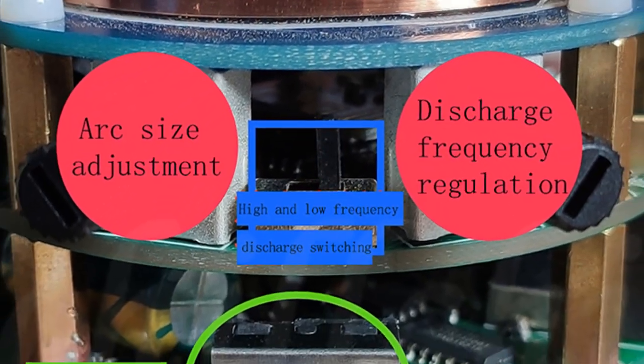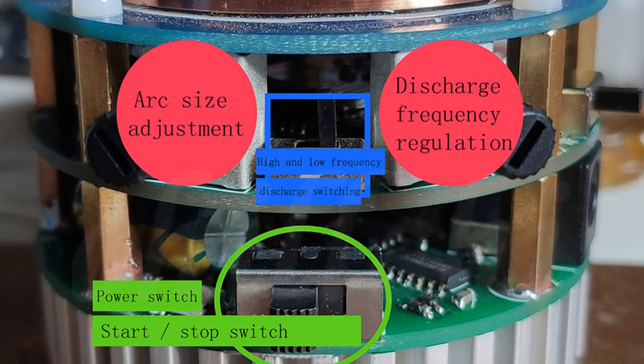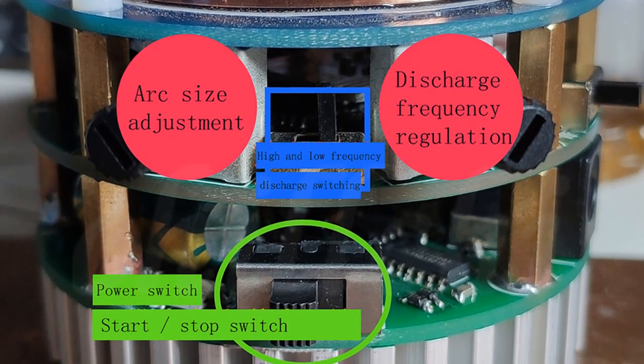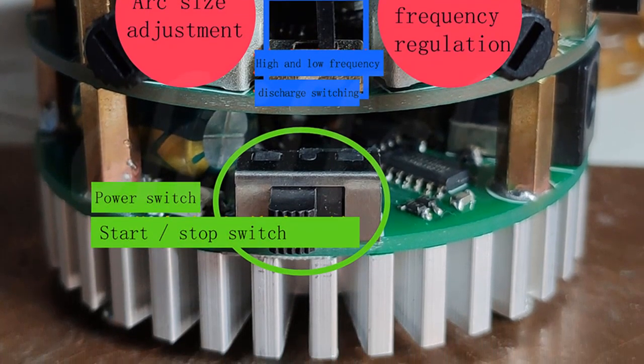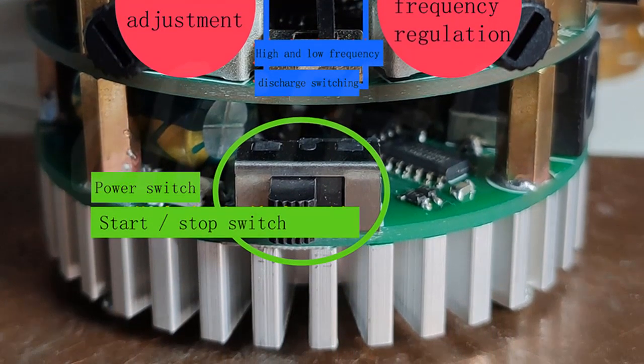While the Tesla coil lighter is a great alternative to traditional lighters, it should not be used around people who have implanted cardiac pacemakers or other life support electronic devices.